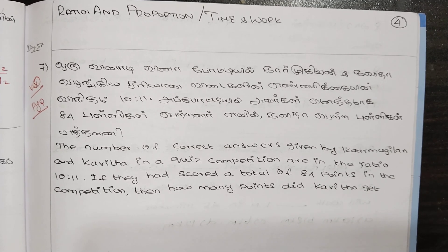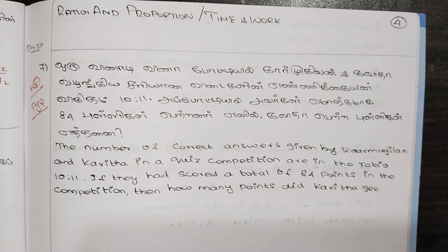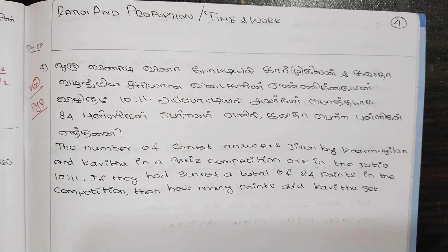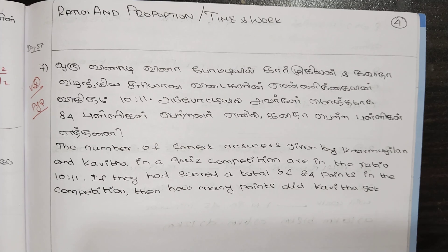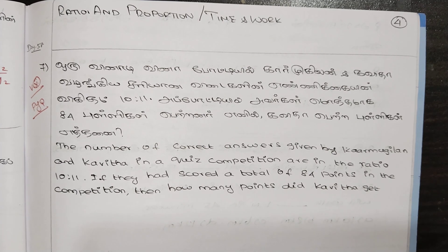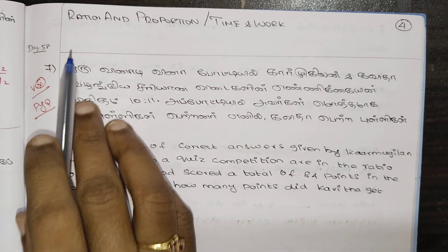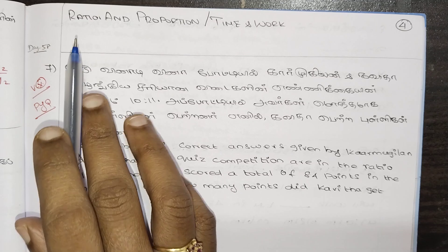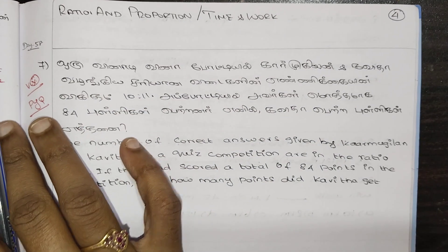The topics we will cover here are: simple interest, compound interest, LCM and HCF, percentage, profit and loss, ratio and proportion, and discount. Now we will talk about ratio and proportion and time and work.